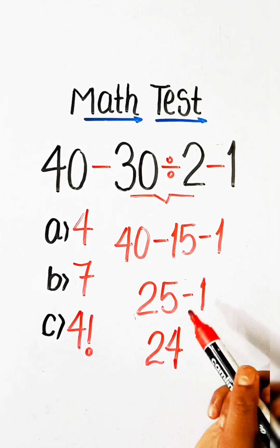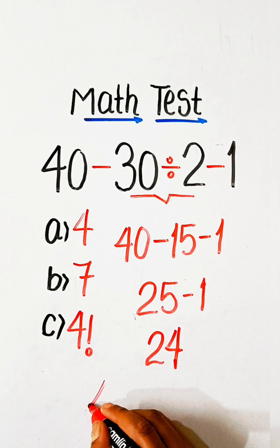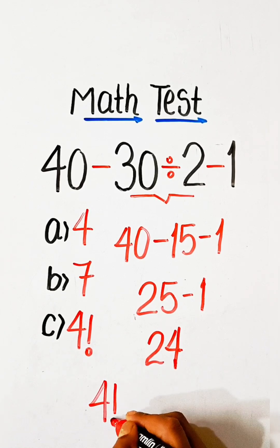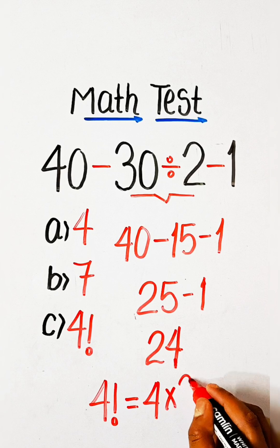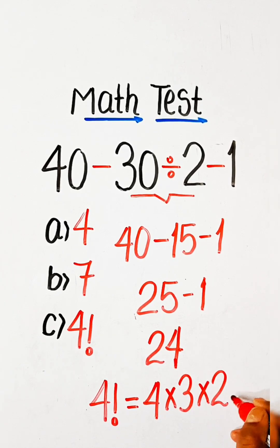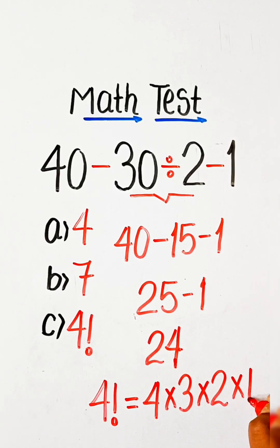We know that 4 factorial equals 4 × 3 × 2 × 1.